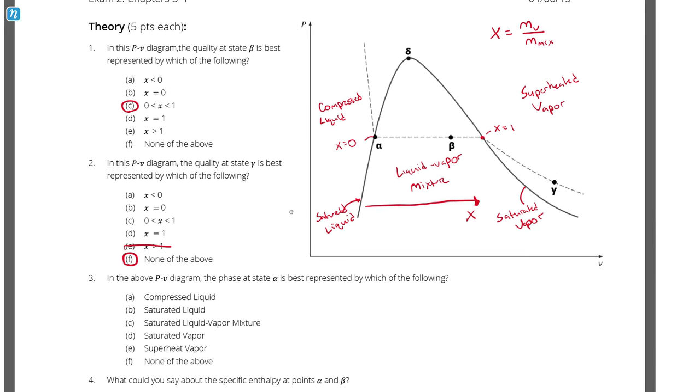Question number three. In the above PV diagram, the phase at state alpha is best represented by which of the following? So alpha is right on the saturated liquid line. Therefore, it is a saturated liquid.